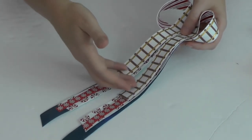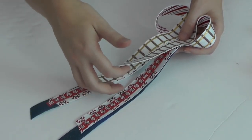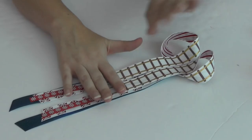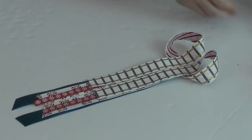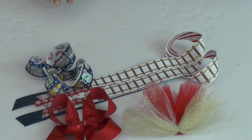Then you can trim up all of the ends how you want them, V-cuts, slant cuts, whatever you want, and then we can put the whole bow together with all of the other pieces.